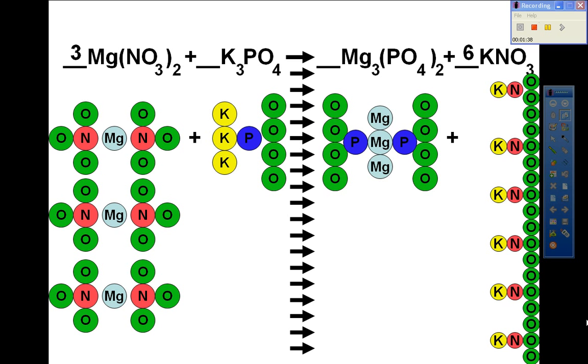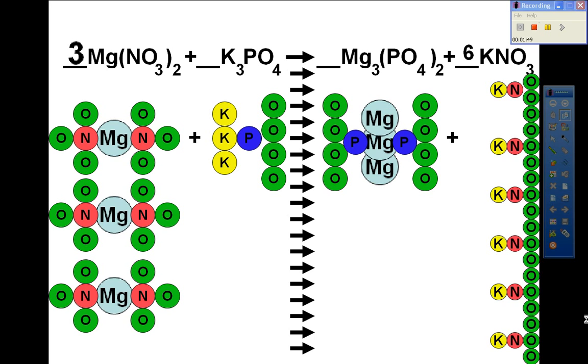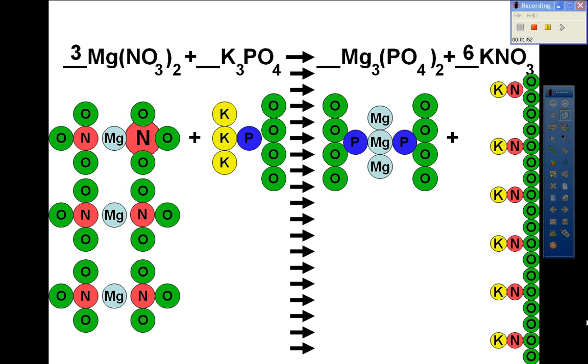Next, we'll take a look at our magnesium again to make sure it still balances. We still have three on the left and three on the right. And our nitrogen are now six on the left and six on the right.